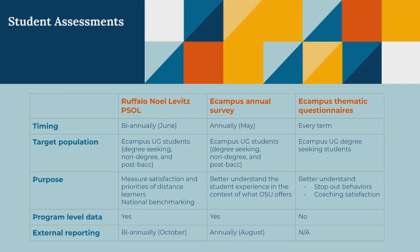The eCampus Annual Survey runs every spring. Same population — all of our undergraduate students with eCampus. It's really trying to better understand their experience in the context of OSU: what we're providing to them and what they might need from us. We can report that out at the program level and try to report it at the end of summer.